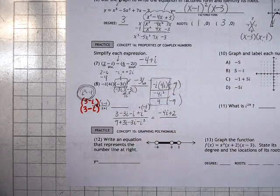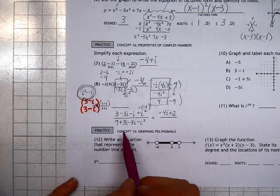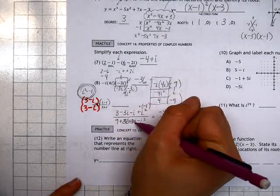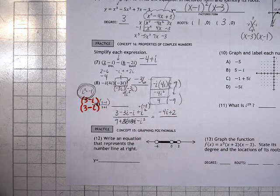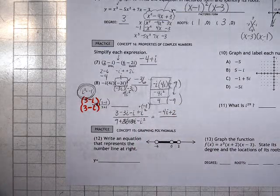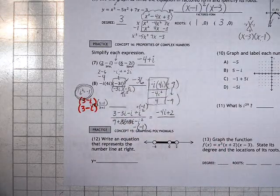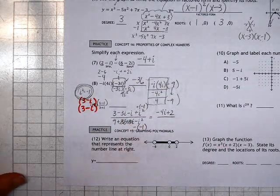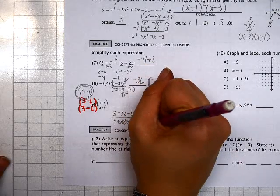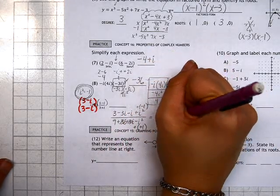Now on the bottom, we can sort of do the same thing. We can add like terms. 3i minus 3i happens to cancel out, so that's rather convenient. You'll notice we also have, again, that i squared. This time we have minus i squared, which we plugged in as negative 1. Minus negative 1 becomes positive, so 9 plus 1 is 10.